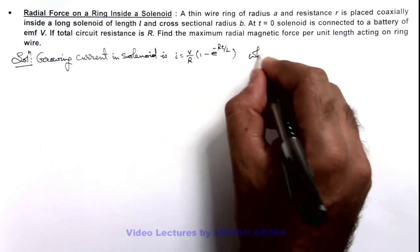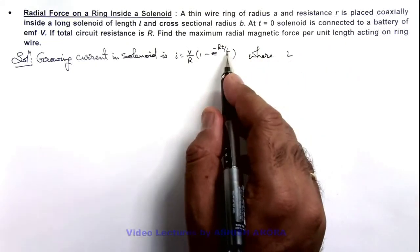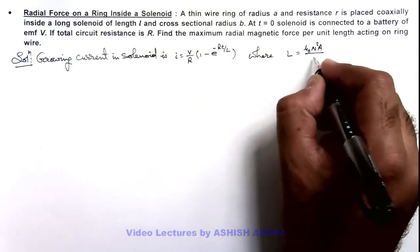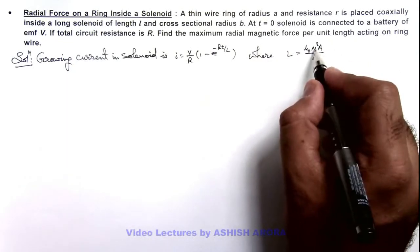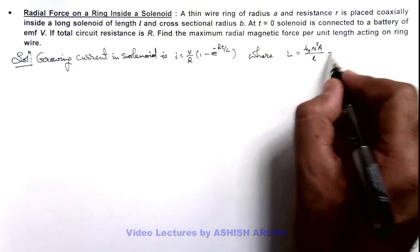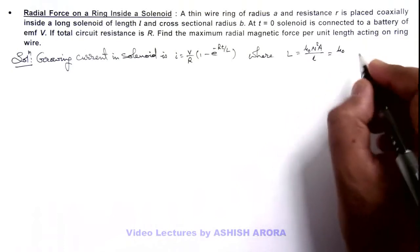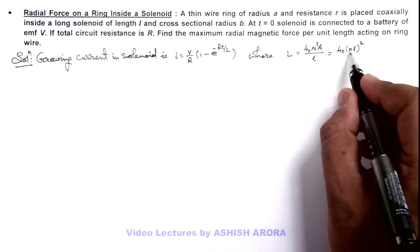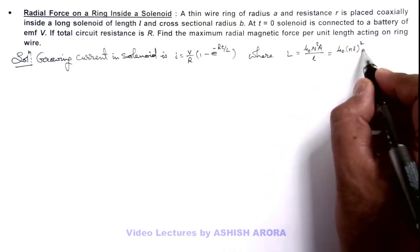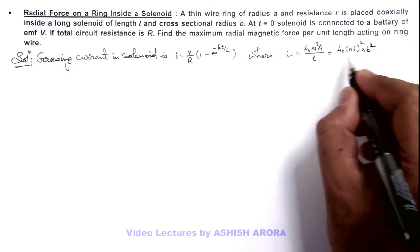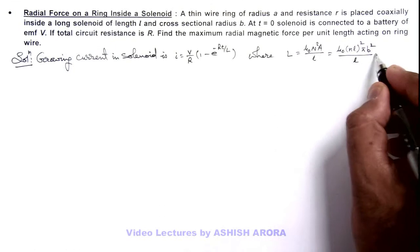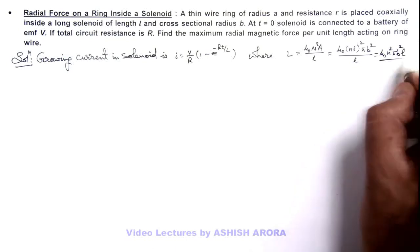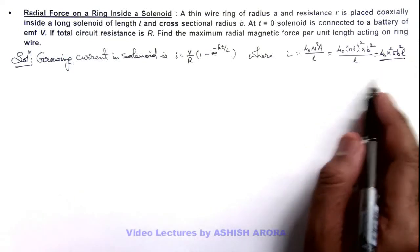We can also write the value of L, the coefficient of self-induction for the solenoid, which is given as μ₀N²A/l. Substituting, N equals nl (where n is turns per unit length), and area equals πb², this simplifies to L equals μ₀n²πb²l. This is the coefficient of self-inductance of the solenoid, which we will use later.